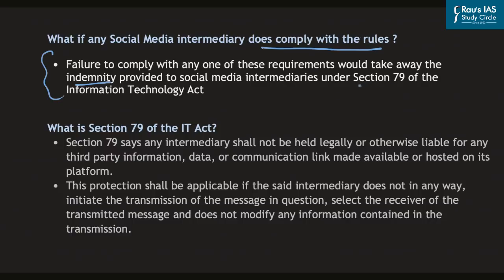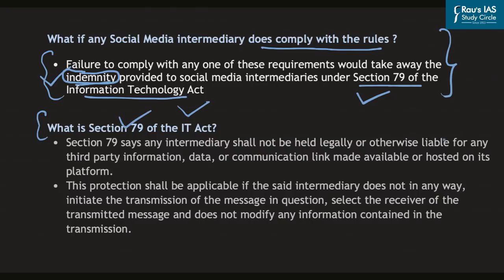Section 79 provides indemnity — protection or security — to social media intermediaries under the Information Technology Act. This is famously known as the safe harbor provision in the IT Act. Simply, Section 79 says that any social media intermediary shall not be held legally liable for any third-party information, data or communication link made available or hosted on its platform. So any information or data hosted on the platform of a social media intermediary means the intermediary shall not be held legally responsible.